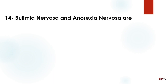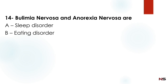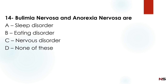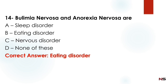Next question: Bulimia nervosa and anorexia nervosa are — Option A: sleep disorders. Option B: eating disorders. Option C: nervous disorders. Option D: none of these. The correct answer is Option B — eating disorders.